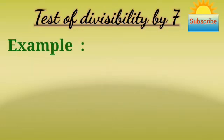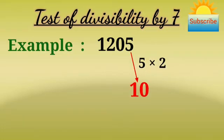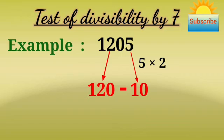Consider another number 1205. Multiply 5 by 2. 5 times 2 equals 10. The number formed by rest of its digits is 120. Now 120 minus 10 equals 110.